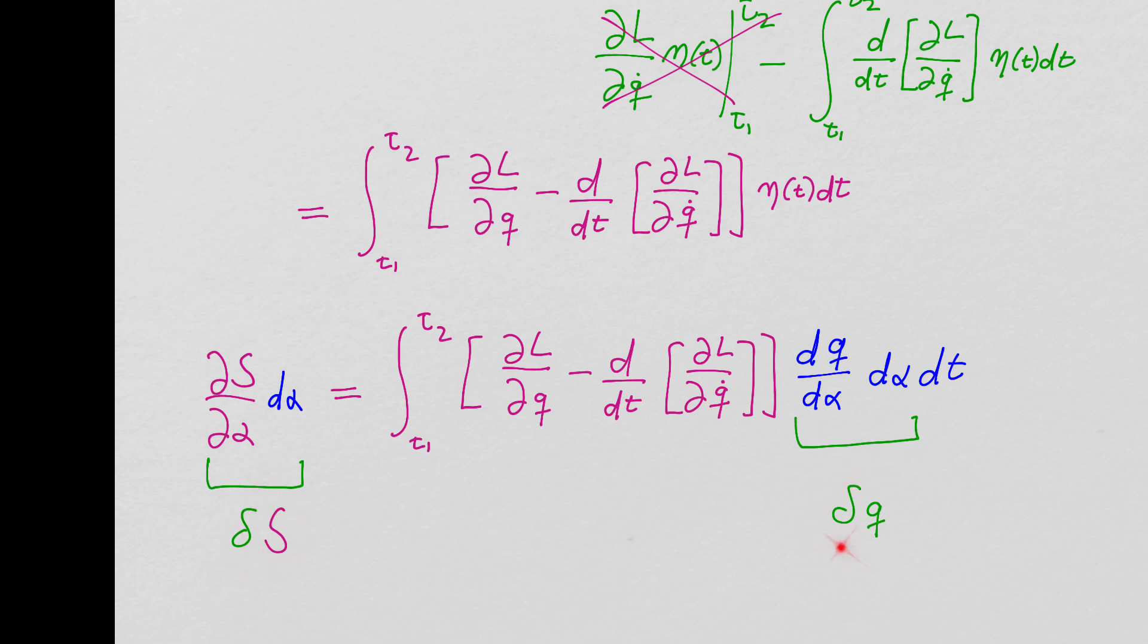And then this eta T is dq d alpha. But if I multiply by d alpha over here, I multiply by d alpha on the right and the left. And I get this new object here and this new object here. This is what I call delta S. And this is what I call delta q.